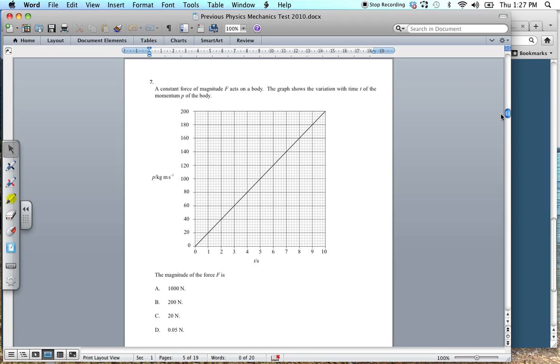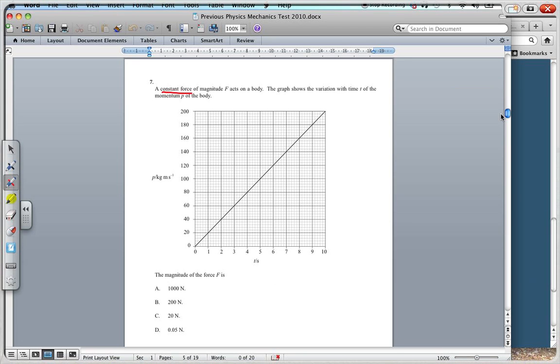So we have a constant force of magnitude F on a body. The graph shows the variation with time of the momentum of the body. The magnitude of the force is given by. Now, obviously we've got the momentum is changing. We've got a changing momentum. It's starting at 0. It's going up to 200. And the time is changing. Now, hopefully when you hear that, changing momentum, time, you would think of this formula over here.